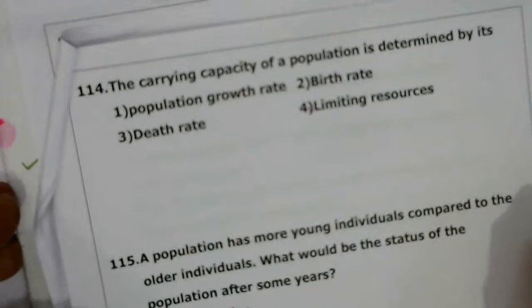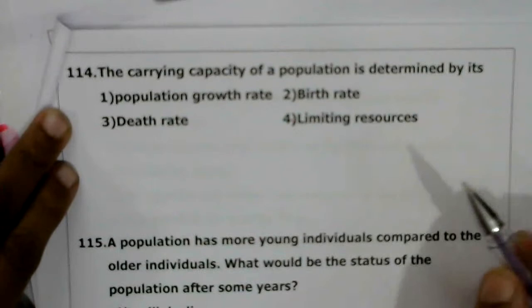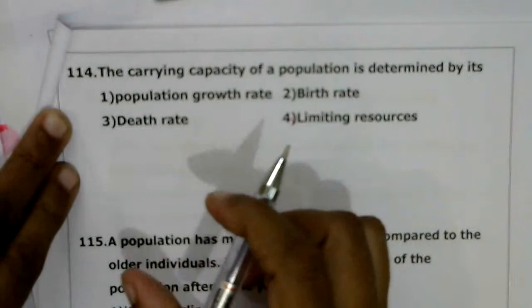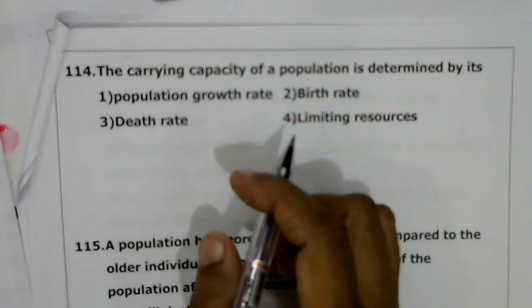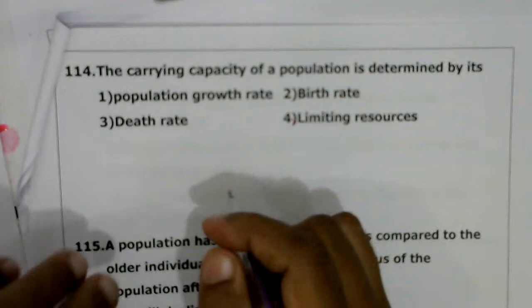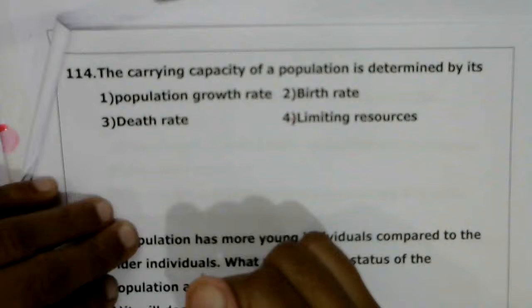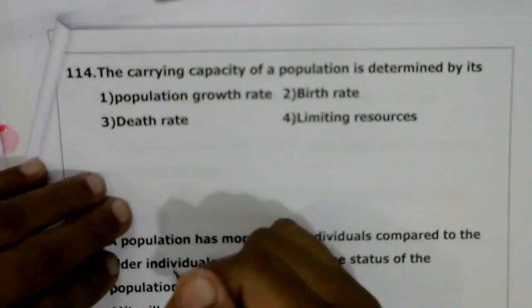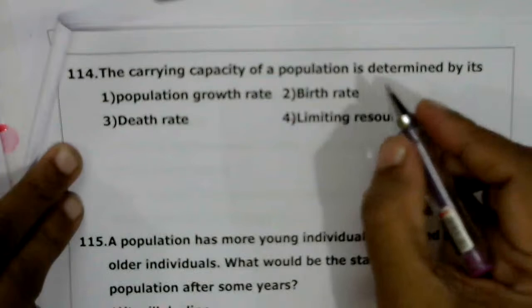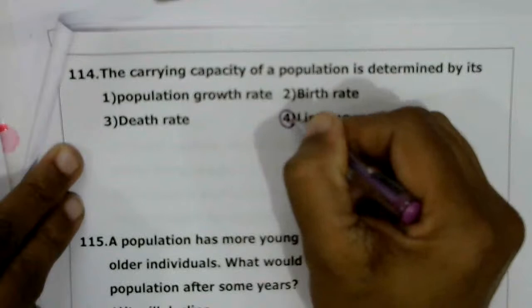Next question: the carrying capacity of a population is determined by — population growth rate, birth rate, death rate, or limiting resources? Carrying capacity is the maximum number of individuals a habitat can support given its resources. Beyond carrying capacity, there is no further increase in population. The carrying capacity is always determined by limiting factors. The correct answer is the fourth option — limiting resources.